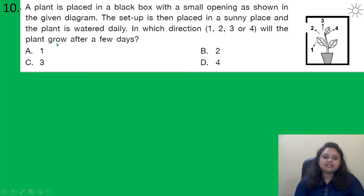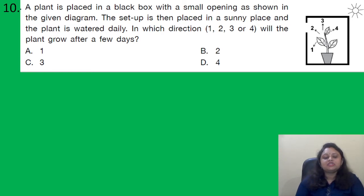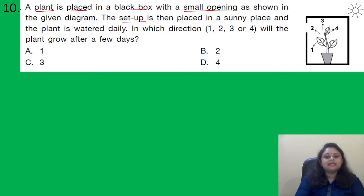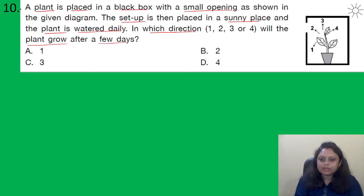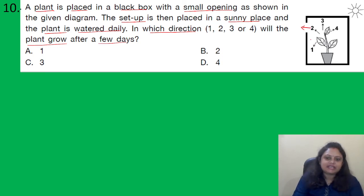Next question: A plant is placed in a black box with a small opening as shown in the diagram. The setup is placed in a sunny place and the plant is watered daily. In which direction — 1, 2, 3, or 4 — will the plant grow after a few days? Since the opening is on one side, light enters from that direction, and the plant will grow towards the light. The correct answer is option B, direction 2.